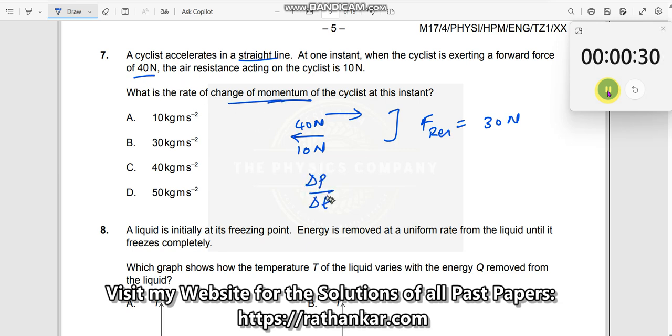Rate means put delta t in the denominator. Whenever we have rate, delta t should be the denominator. Delta p by delta t equals what? That's what we're asked. Delta p by delta t is nothing but the force by Newton's second law. Which force? The resultant force.